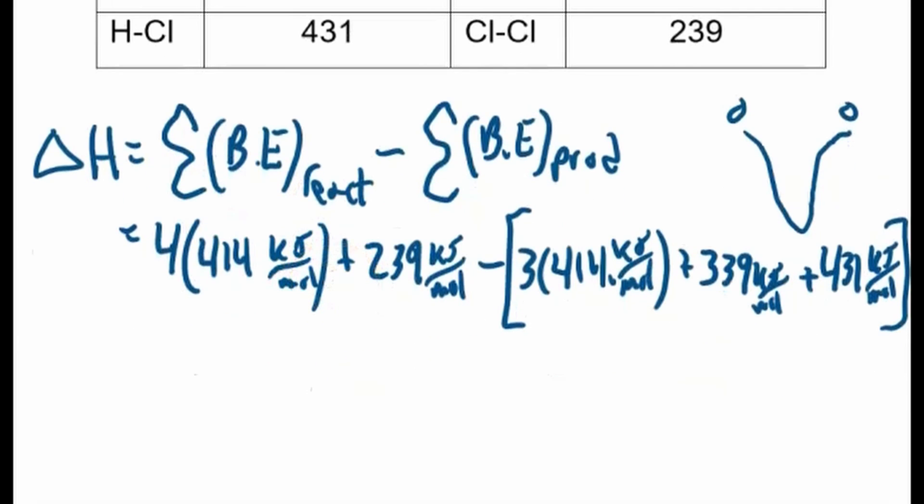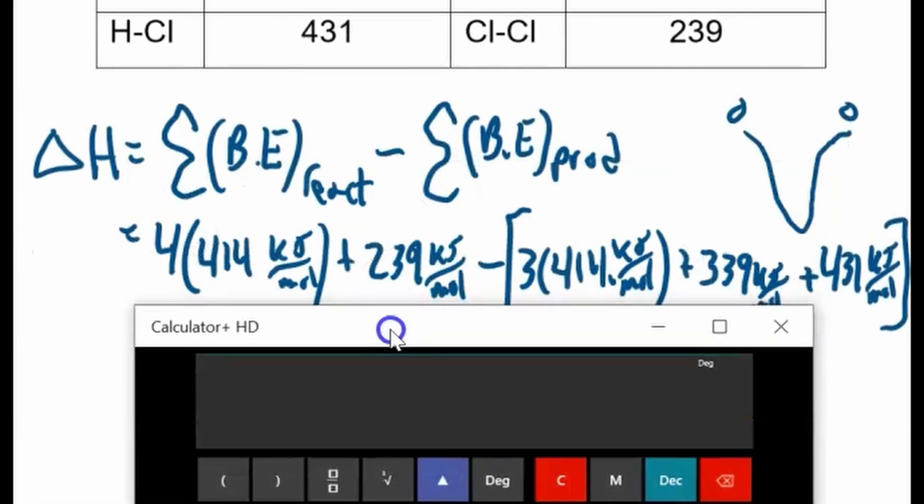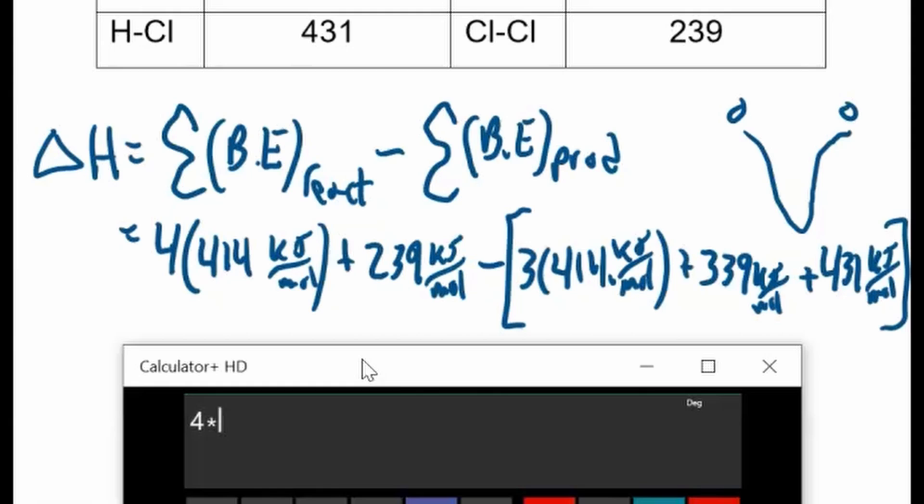So we'll add that all up in our calculator. 414 plus 239 minus big bracket, 3 times 414 plus 339 plus 431, close brackets. All looks good. I like these calculators where I can see what I type. Negative 117.